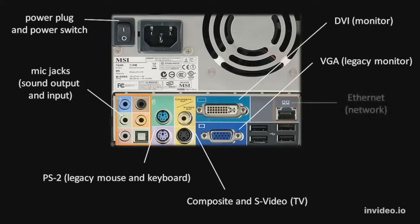This connector on the right, which looks like an oversized phone jack, is for Ethernet, which is the most common connection for wired networking. Most commonly, this is the port you use to get an internet connection.